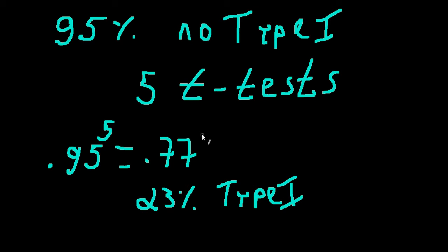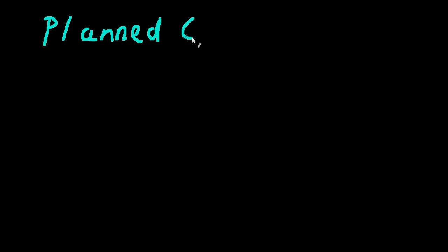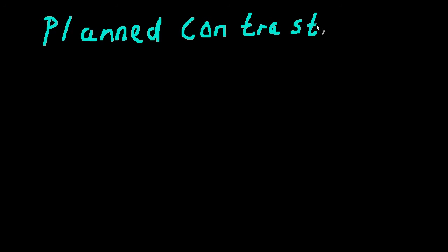That's way too much, and we've got to get around that problem. We do that by doing what we call planned contrasts. If we can't run multiple t-tests at the same time, why not just iterate through the different comparisons step by step?